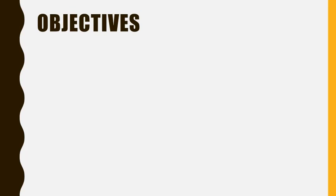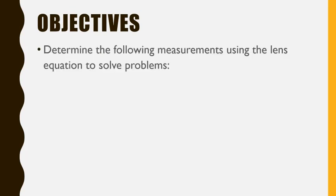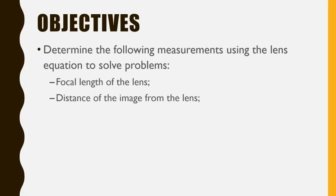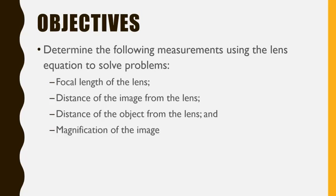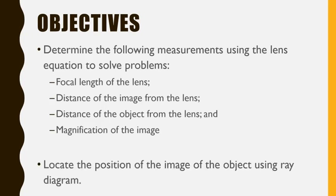The objectives of this video lesson are the following: determine the following measurements using the lens equation to solve problems, such as finding the focal length of the lens, distance of the image from the lens, distance of the object from the lens, and the magnification of the image. Also, to verify our answers, we are going to locate the position of the image of the object using ray diagram.